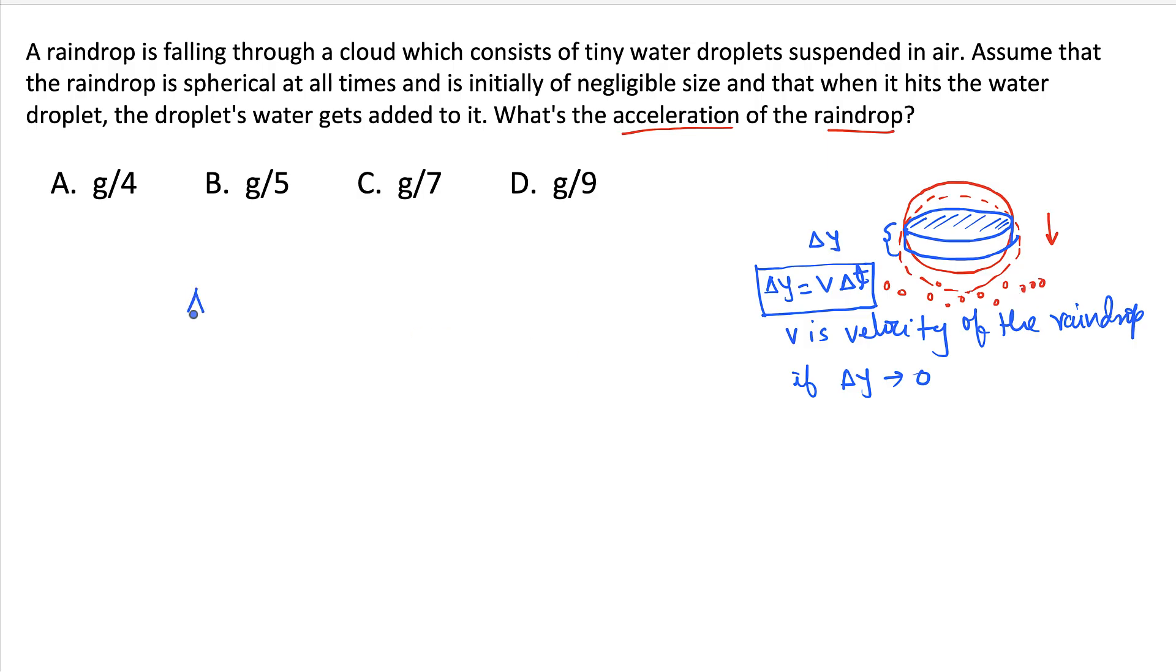So delta V, if we write volume of droplets collected by the raindrop in delta T seconds, when the velocity of the drop is small v.